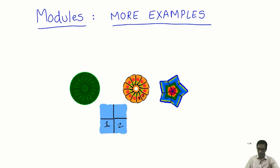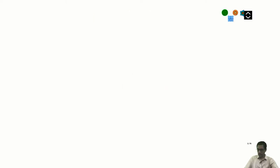Today we will talk about more examples of modules. So far we have seen modules over the ring Z, which are abelian groups, and modules over the ring K[x], which are basically vector spaces together with a linear operator. Now let me consider some non-commutative rings. When I say module, I will always mean left module, but today we will also talk about some right modules.